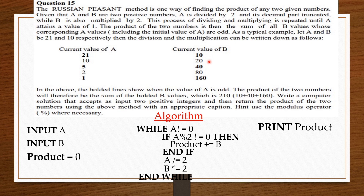Back to the top: while a is not equal to 0 — a is now 10, which is not 0, so we enter the loop. If a modulo 2 is not equal to 0: a is 10, which is even, so we skip the if statement. Then a divided equals 2: divide 10 by 2, giving us 5. B times equals 2: multiply 10's corresponding b value, which is 20, by 2 — giving us 40.